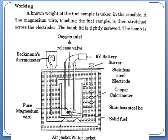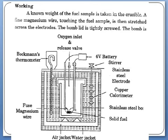The magnesium wire is supplied with 6-volt DC current to initiate ignition. A stirrer ensures uniform heating. The assembly is enclosed in a stainless steel container. There is also an oxygen inlet and a release valve. Outside the copper calorimeter, there is an air gap forming an air jacket, which is again surrounded by water forming a water jacket.